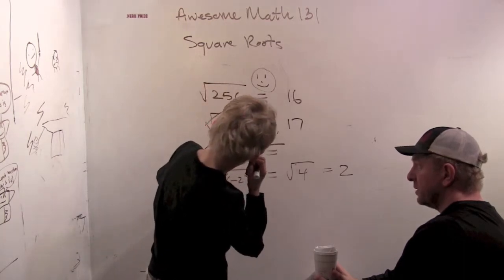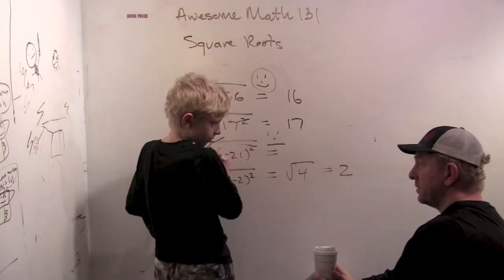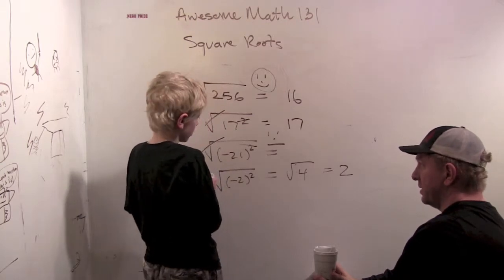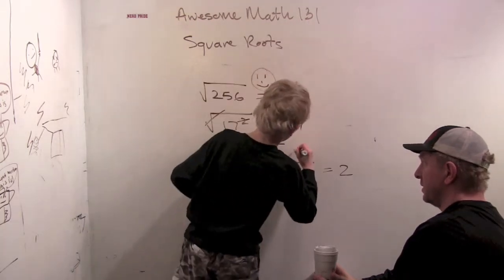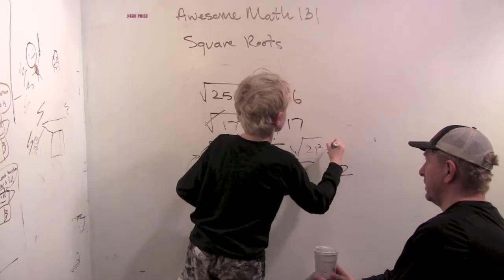So we can make this, we can square it and we get 21 squared. So we get the square root of 21 squared.